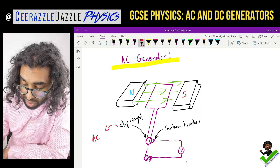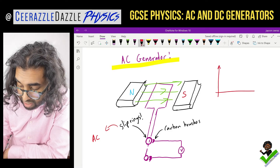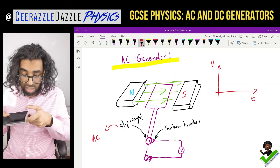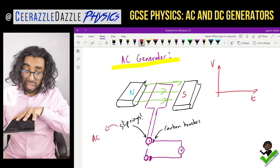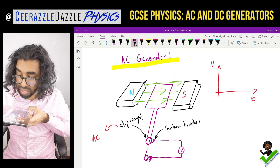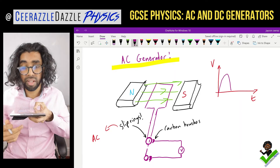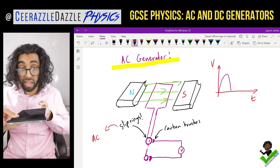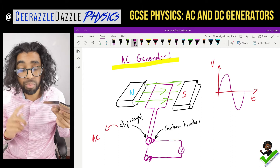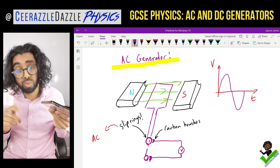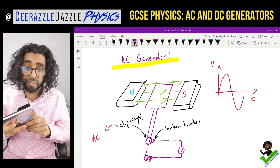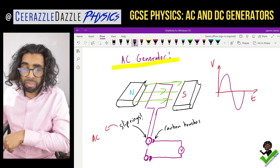With slip rings instead of split rings, the voltage can swap direction. A helpful memory tip: 'slip' means it can alternate — slip rings indicate AC, alternating current. On the voltage-time graph, as the coil makes the first half turn the voltage goes positive, and on the next half turn the voltage swaps direction, because the slip rings enable the voltage to alternate.